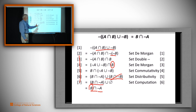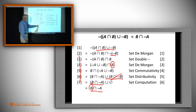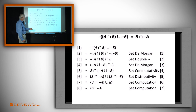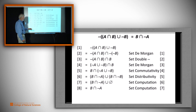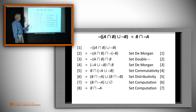We also realize that any set — for example B intersect the complement of A — union with the empty set is the same as that first set. So we erase that portion, using the identity that anything union with the empty set equals the original set. That's our last step, and we end up with our right hand side. We've gone through a chain of equalities from our left hand side to our right hand side in eight steps.